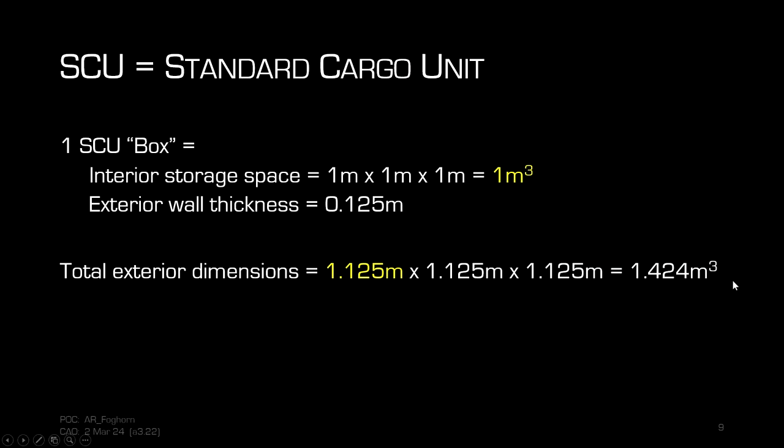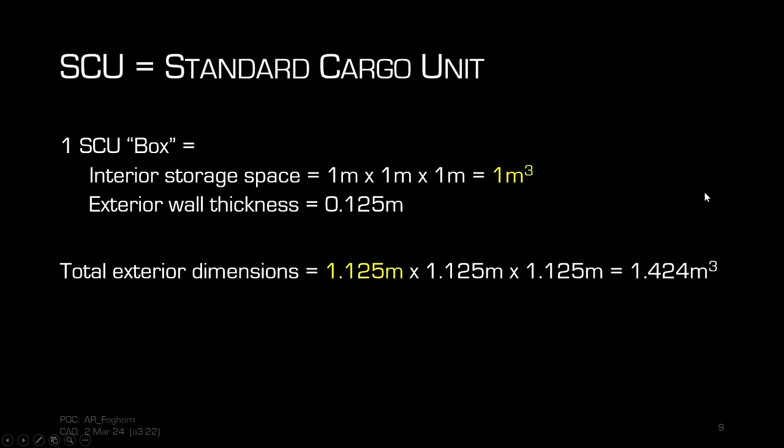Those units of standard cargo, or SCU — Standard Cargo Unit — is exactly what the name says: the standard measurement size of what we call the one SCU box. Its interior space is intended to be one meter by one meter by one meter. However, the box has an exterior wall whose thickness is one-eighth of a meter, so the total exterior dimensions are 1.125 × 1.125 × 1.125, for a total of 1.44 meters cubed.